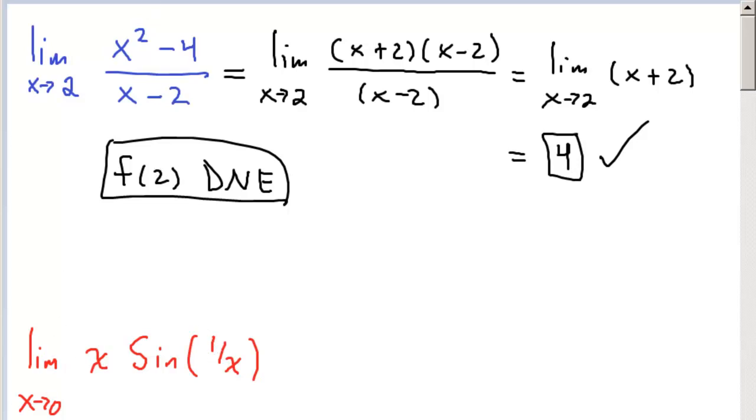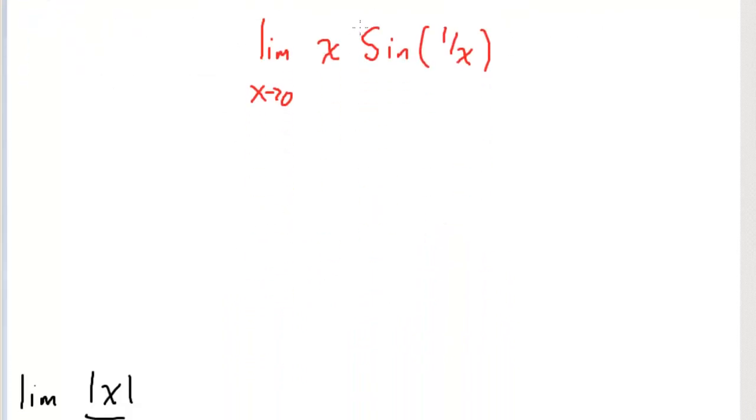Now, for the second problem, what we're going to do is use the squeeze theorem. And the squeeze theorem basically says that we know sine of any argument is going to be restricted to some number that's between negative 1 and positive 1. So that means that the smallest sine of any argument can be is negative 1.